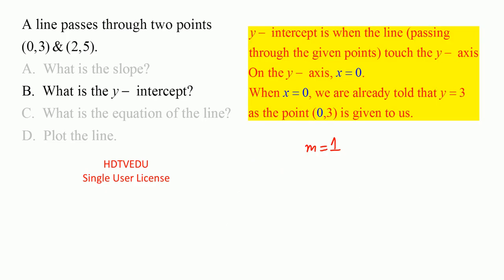So what is the y-intercept? Y-intercept is when the line touched the y-axis. When the graph touched the y-axis. What do we know about the y-axis? On the y-axis, x is equal to 0.